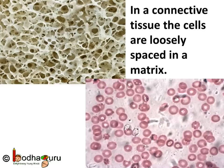In the case of blood, that matrix is fluid and is called plasma, so blood is a liquid or fluid tissue. In the case of bone, that matrix is dense and rigid, composed of calcium and phosphorus compounds.